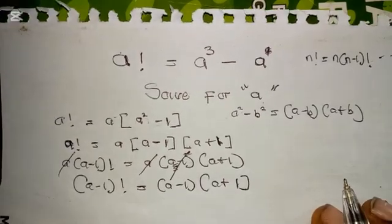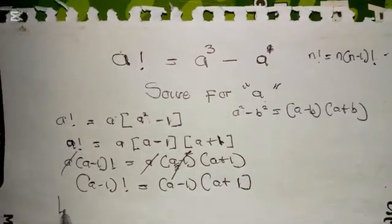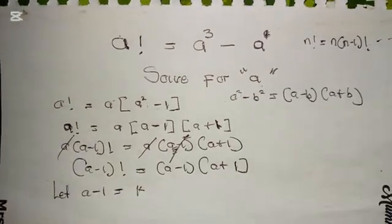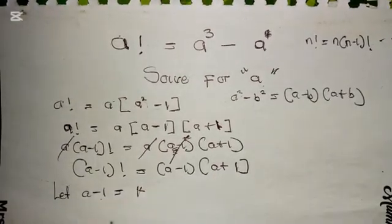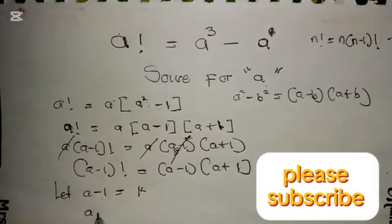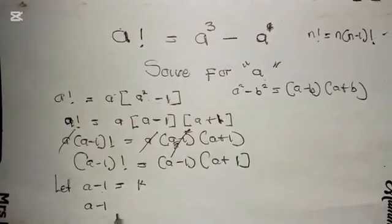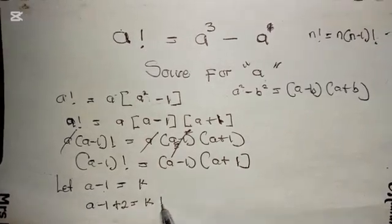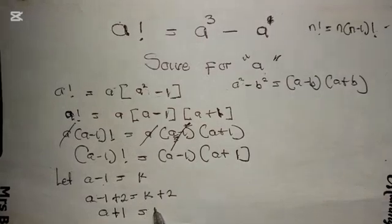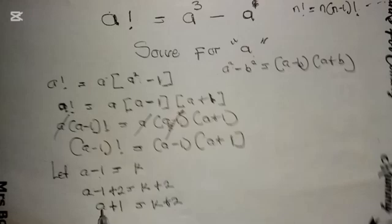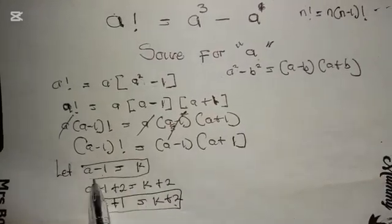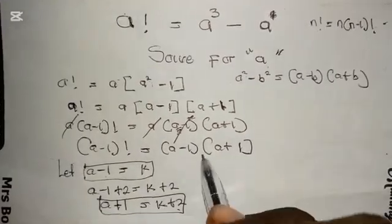Now we solve for a. Let a minus one equal k. Therefore, if a minus one equals k, then a plus one equals k plus two, because adding two to both sides of a minus one equals k gives a plus one equals k plus two.